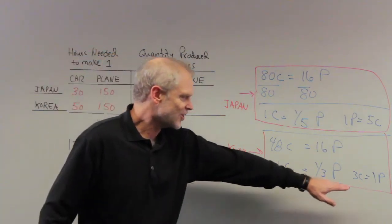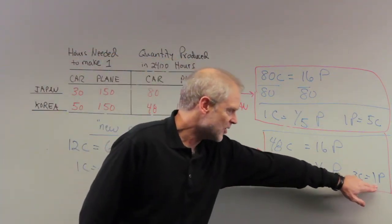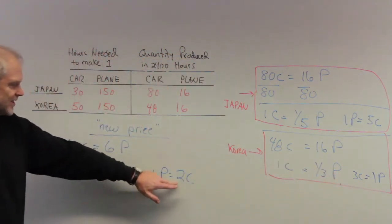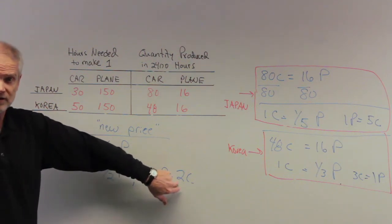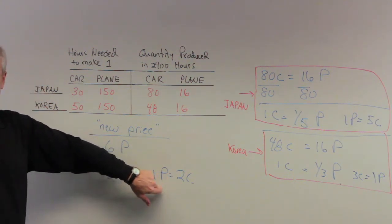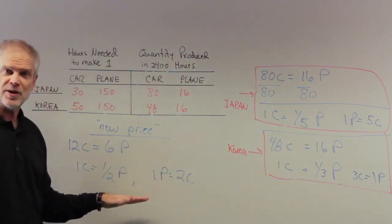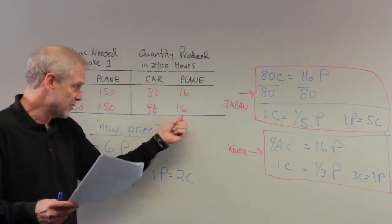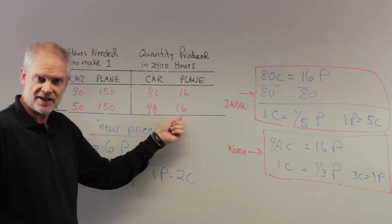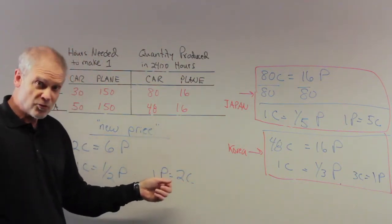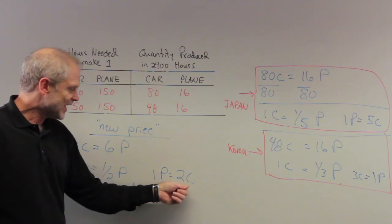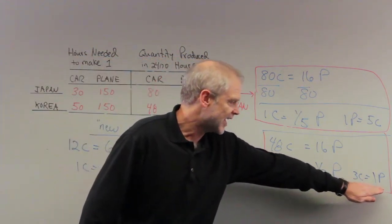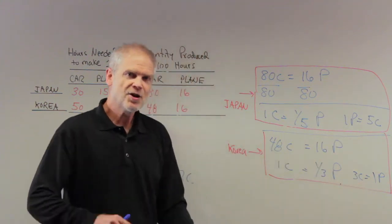So for Korea, internally, they can take their one plane and buy three cars from their own country. The trade is saying, well, take one of your planes, you're only going to get two cars for it. This is a terrible deal for Korea. This makes no sense for Korea to trade. Korea is stuck producing planes. And with those planes, cars have become really expensive because they can only get two cars for every plane.